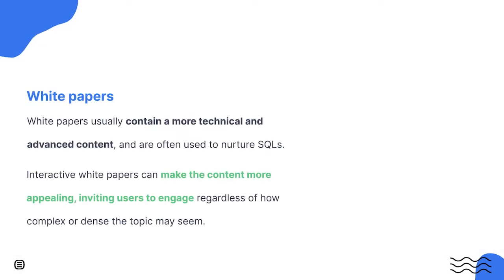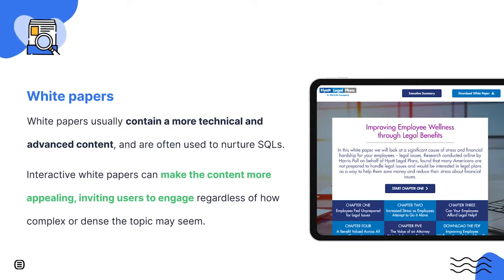White papers look a lot like e-books but usually contain more technical or advanced content. They are often used to nurture SQLs — sales qualified leads. They can be a step-by-step guide on something more technical or a guide created to explain a complex topic in a more detailed way. By creating interactive white papers, you can make them more appealing to users and let them consume the content however they need it. The interactivity can help with how dense or complicated a topic may seem, and just make it more interesting, inviting users to engage with the content.